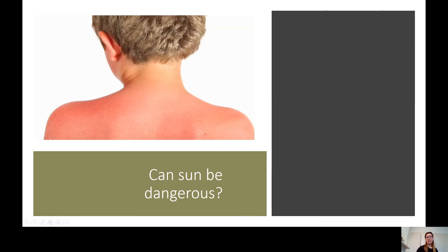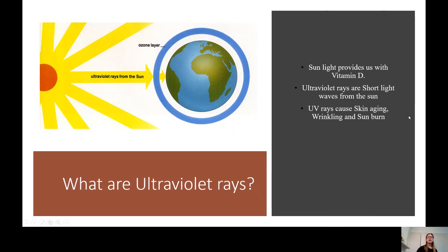OK, the next question is, can sun be dangerous? Well, we learned a little bit about ultraviolet rays earlier. So we know that sunlight provides us with vitamin D, which is good for us. So it's important to get a bit of sun, especially in the winter. But ultraviolet rays are short light rays from the sun. They move from the sun towards the Earth through the ozone layer, which filters out a lot of UV rays. But UV rays can cause skin aging, wrinkling and sunburn.